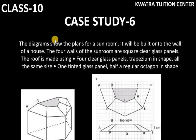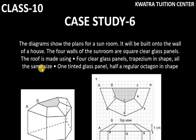The diagram shows the plans for a sunroom. It will be built onto the wall of a house. The four walls of the sunroom are square clear glass panels. The roof is made using four clear glass panels, trapezium in shape, all the same size. One tinted glass panel, half a regular octagon in shape. On the top they have used glass panels, trapezium in shape, and all the shapes are the same size.